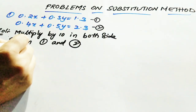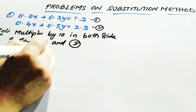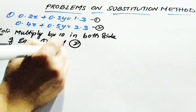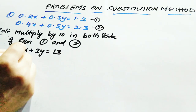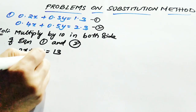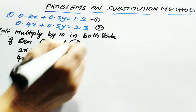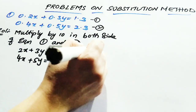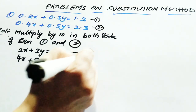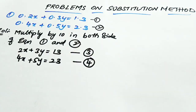After multiplying by 10, the values you get are: 2x plus 3y equal to 13, and 4x plus 5y equal to 23. Consider these as equation 3 and equation 4.